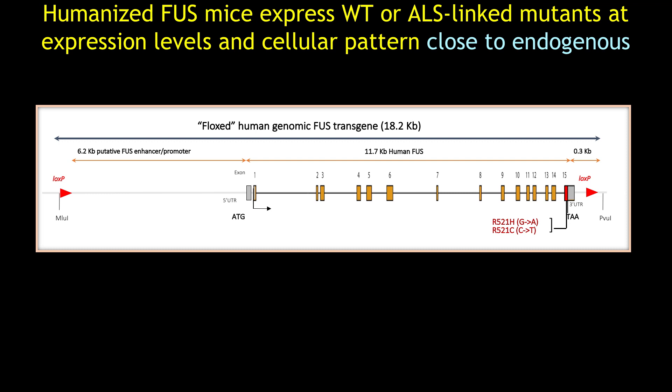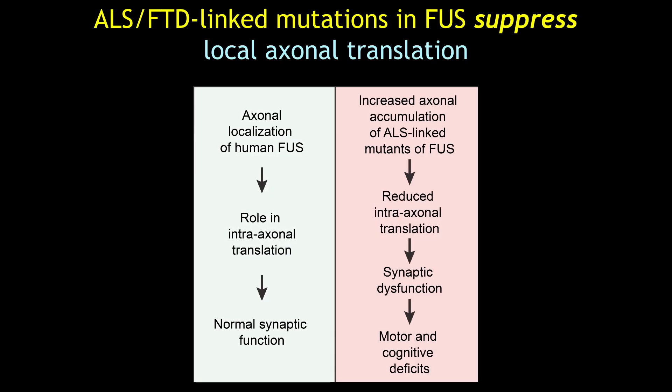We created a humanized mouse model by replacing endogenous FUS with the human FUS gene, either wild-type or two ALS-linked mutations, and we found that these mutant FUS mice recapitulated aspects of ALS and FTD diseases. Using these animals, we uncovered a novel role of FUS in intra-axonal protein synthesis, which we found was impaired prior to symptoms and correlated with the accumulation of FUS mutants.